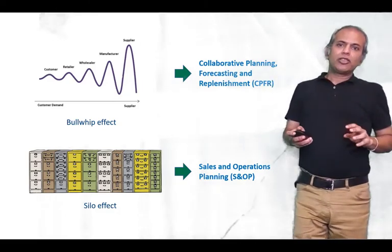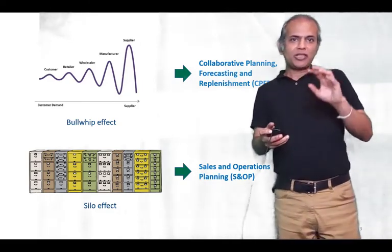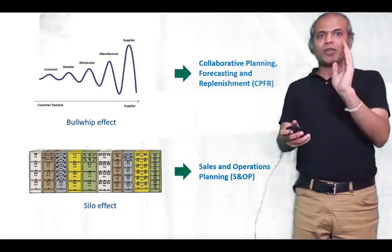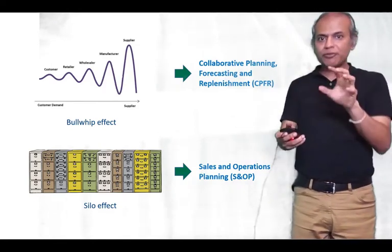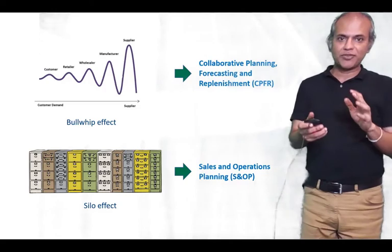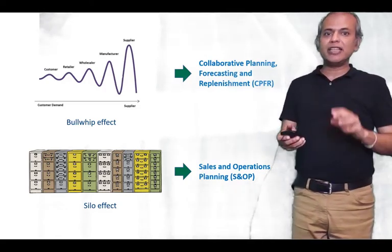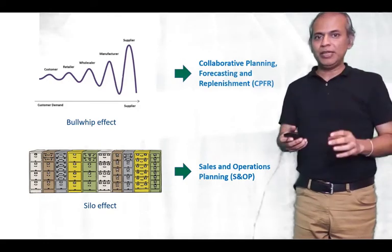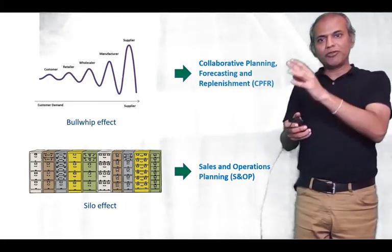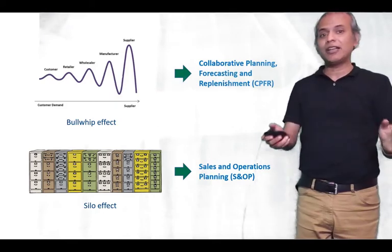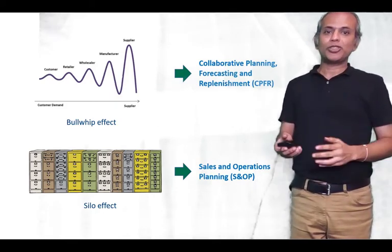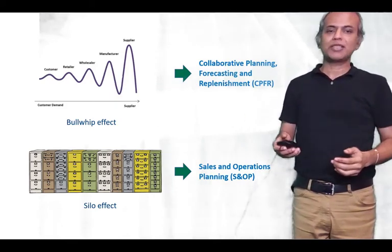Well, that's about it for this session where what we saw was that there are two primarily across firm problems and within firm problems that prevent us from getting good data. And we had a brief glimpse into these two techniques, CPFR and S&OP, which helps us tackle these across firm and within firm problems for sharing data and improving our forecasting process.